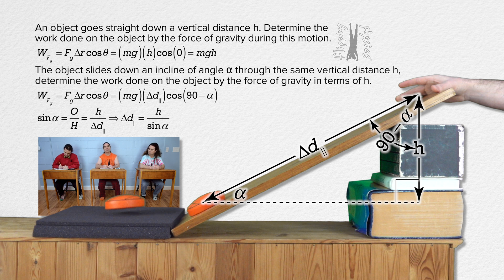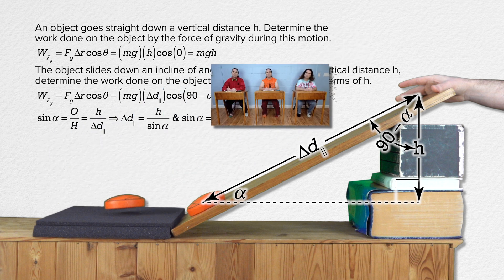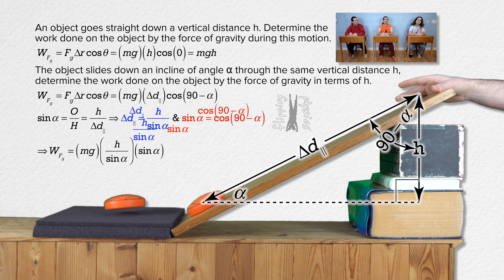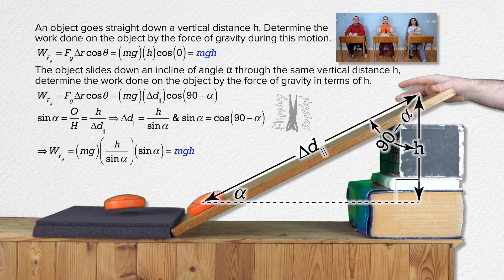Sine and cosine have the same shape; they are just phase shifted 90 degrees from one another. In other words, sine alpha equals cosine of 90 minus alpha. Therefore, the work done by the force of gravity on the object equals mass times acceleration due to gravity times h over sine alpha, all times sine alpha. Sine alpha cancels out and we are left with mass times acceleration due to gravity times height h, which is exactly the same as the work done when the object went straight down a distance h.